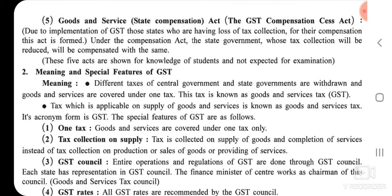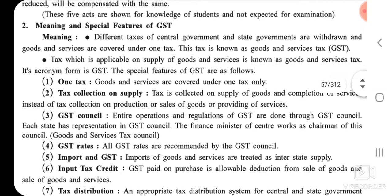Now, the meaning and special features of GST. Meaning of GST: Different taxes of the central government and state governments are withdrawn and goods and services are covered under one tax. This tax is known as Goods and Service Tax, meaning GST. Tax which is applicable on supply of goods and services is known as Goods and Service Tax, abbreviated as GST.